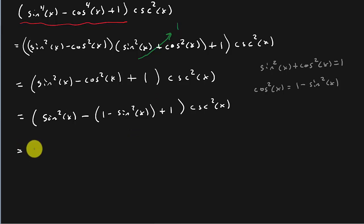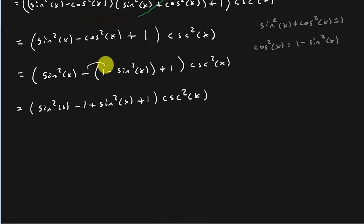And so now that's going to give me sine squared x minus 1 plus sine squared x plus 1 times cosecant squared x. Now that's coming together now isn't it. I just distributed the negative 1. See how negative 1 plus 1 is 0, and sine squared plus sine squared would be 2 sine squared x times cosecant squared x.